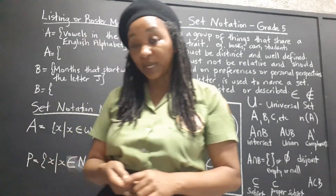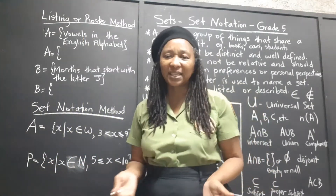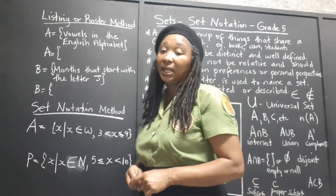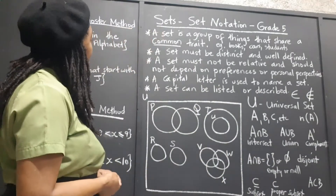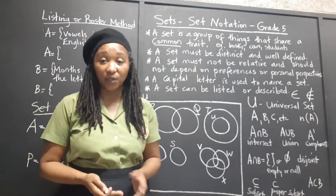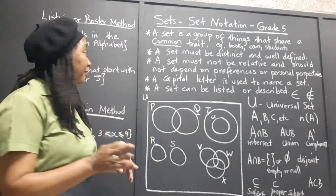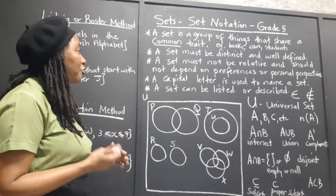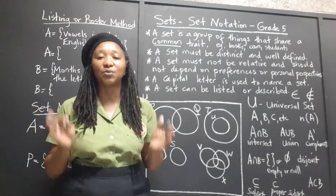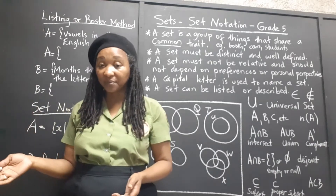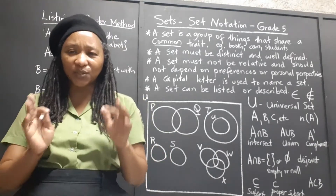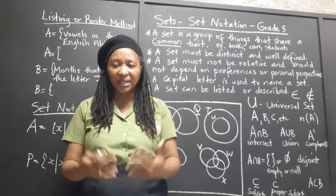So let's look at what are these symbols that are used when we're talking about sets. Let's look at some definitions first. A set, as you may know by now if you have been following the videos on sets — just a reminder — a set is a group of things that share a common trait. They have at least one thing in common, and they might have other features in common, but at least one thing brings them together.